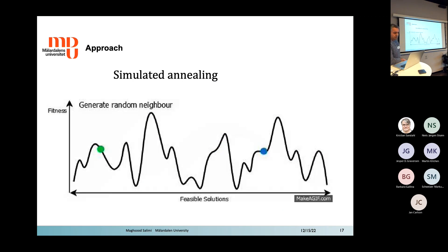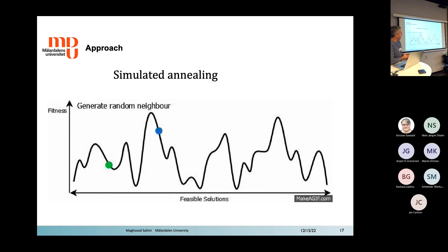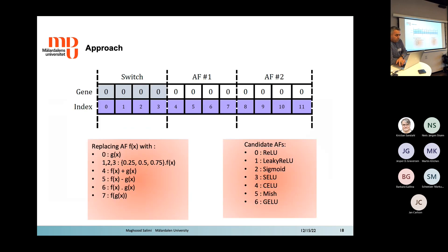Since the search space is very large, we first tested our approach using a genetic algorithm. However, we found it was very time-consuming — training a network on CIFAR-10 can take about one week. So we replaced the genetic algorithm with simulated annealing. We added data to show how different parameter values can be selected to generate new activation functions and pass them to the algorithm to evaluate their performance.